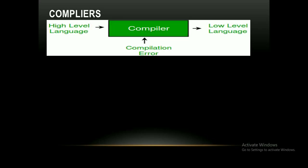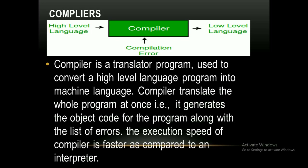A compiler is a software that converts high-level language into low-level language and removes compilation errors. Unlike an interpreter, a compiler translates the whole program at once — generating the object code along with a list of errors. The execution speed of a compiler is faster compared to an interpreter.